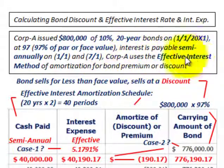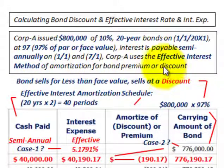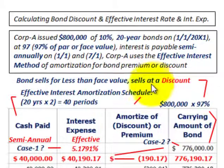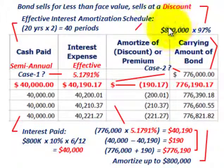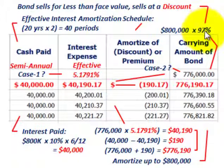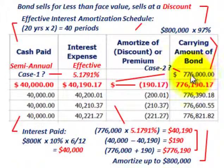Corporation A uses the effective interest method for amortization of the bond premium or discount. In this case, the bond sells for less than the face value, so it sells at a discount. The face value is $800,000, and 97% of that gives us a carrying amount or issue price of $776,000.